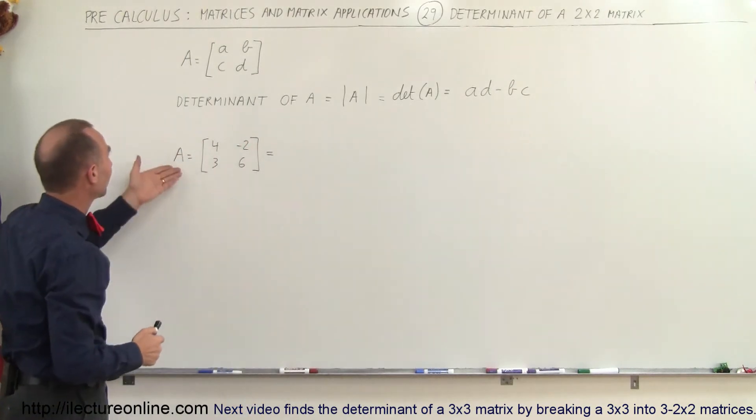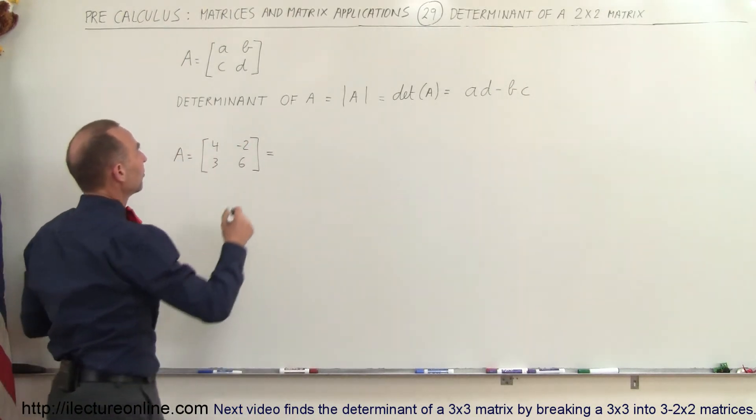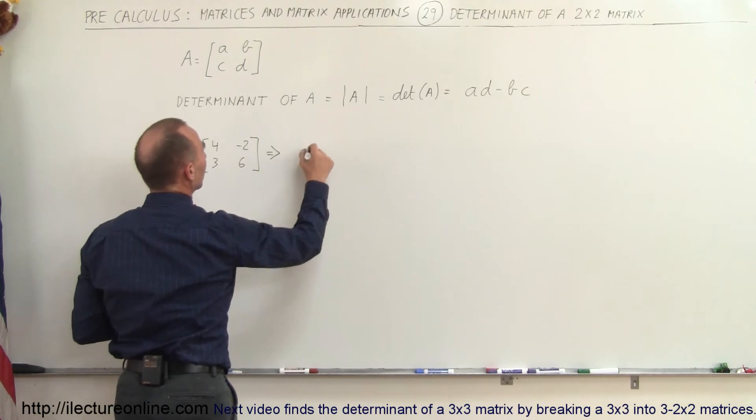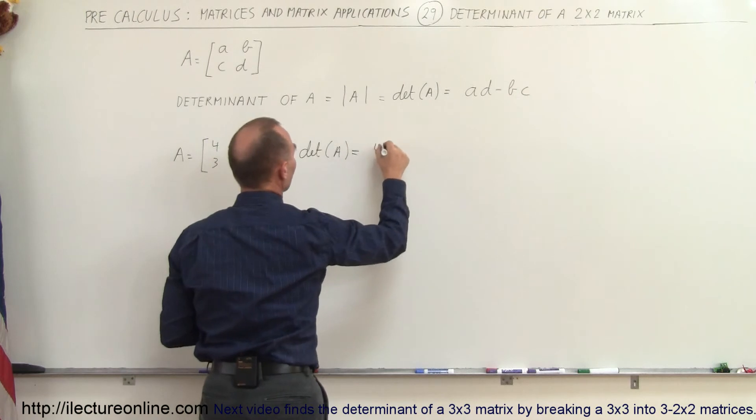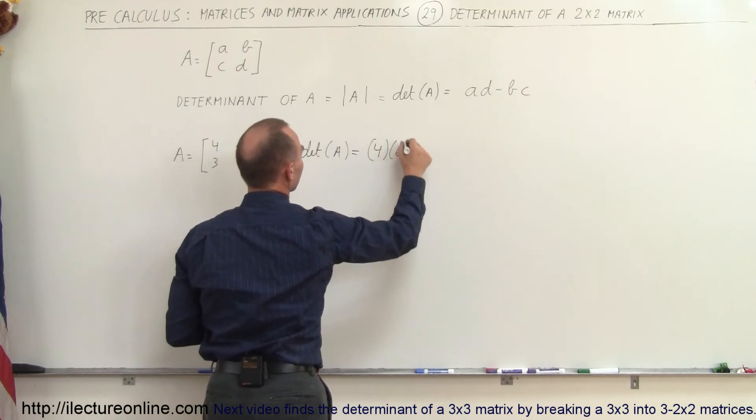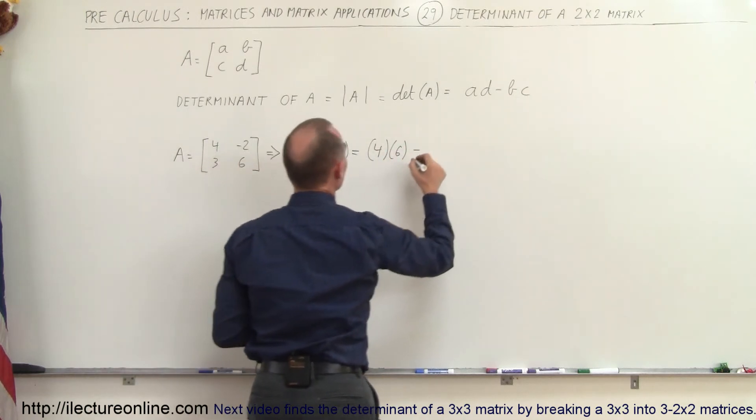As an example, here we have a simple matrix, and if you want to find the determinant of that, the determinant of A can be written as the product of 4 times 6, minus the product of 3 times negative 2.